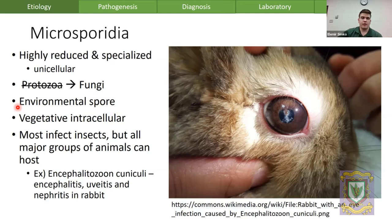They were formally classified as protozoa based on morphology but were reclassified to fungi based on genomic evidence. They form a very tenacious, resilient environmental spore, and their only metabolically active stage is their vegetative intracellular life stage. Most species infect insects, but all major groups of animals can host — for example, Encephalitozoon cuniculi in rabbits causing uveitis, encephalitis, and nephritis.